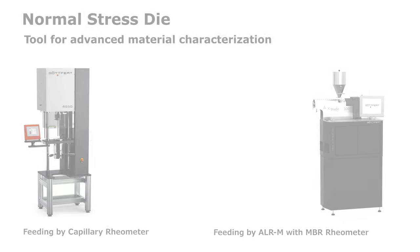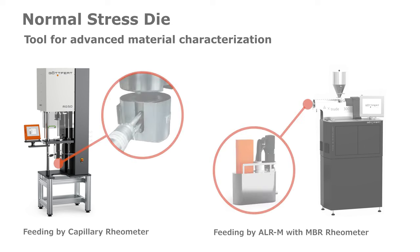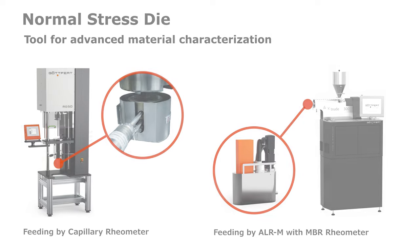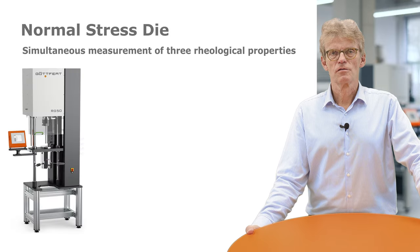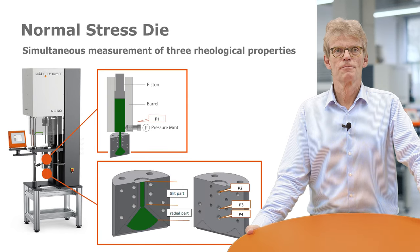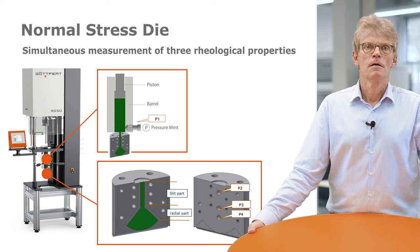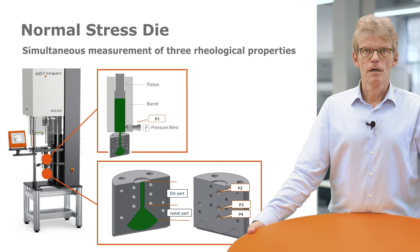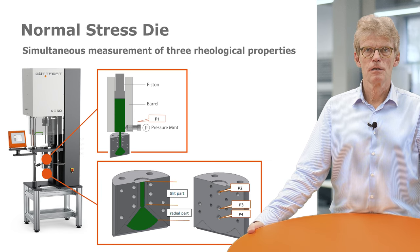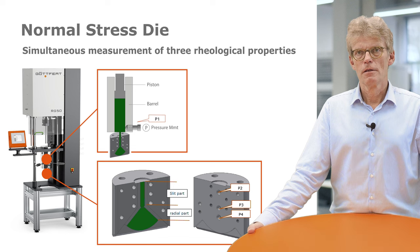The normal stress die can be placed below our capillary rheometer, just below the barrel instead of the usual die, or it can be located at the at-line rheometer MBR, also instead of a die. The normal stress die consists of a slit part and a radial part, which is a quarter of a cycle.